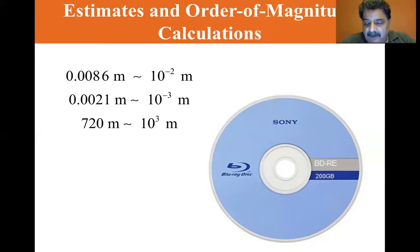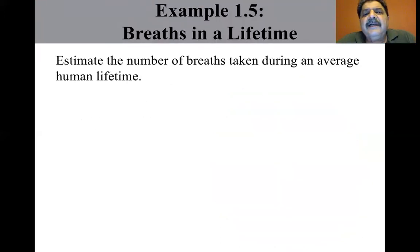Okay. Let's go to the next slide. Let's estimate the breaths, the number of breaths taken during an average human lifetime. We start by guessing that the typical human lifetime is about 70 years. Think about the average number of breaths that a person takes in one minute. This number varies depending on whether the person is exercising, sleeping, angry, serene, and so forth. To the nearest order of magnitude, we shall choose 10 breaths per minute as our estimate. This estimate is certainly closer to the true average value than an estimate of one breath per minute or 100 breaths per minute.